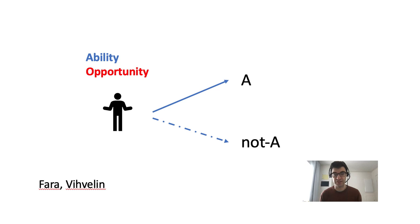Farron and Wivelin deny that free will requires an opportunity in Franklin's sense. For them, you can be morally responsible for doing A even if there was some obstacle that would have prevented you from doing not-A. It only matters that you have the ability to do not-A, even if that ability is masked in the sense that there's something that would make it very difficult and would prevent you from actually manifesting the ability.